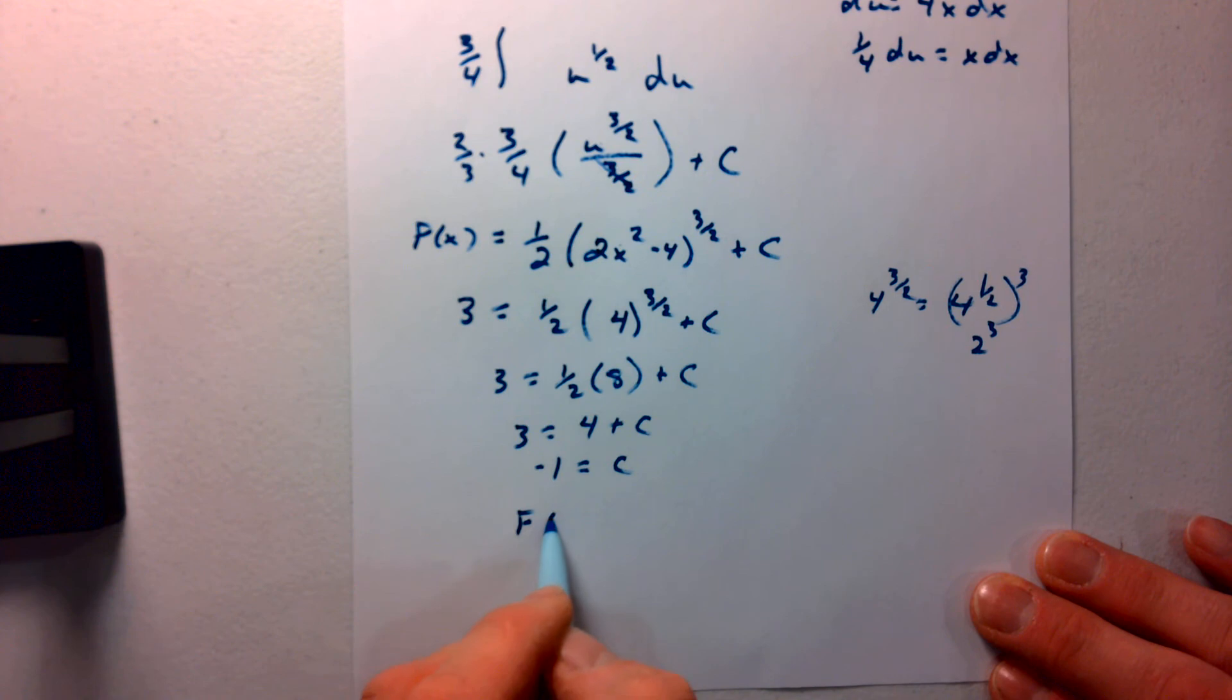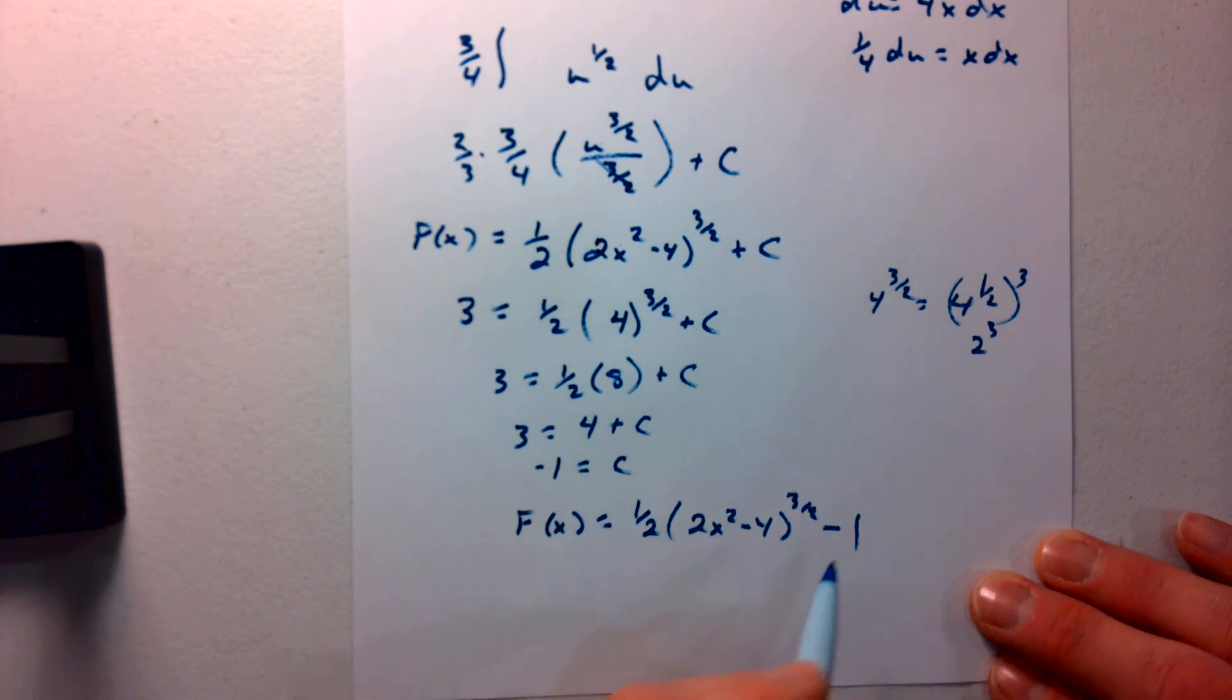So our original function, f of x, is going to equal 1 half the quantity of 2x squared minus 4 to the 3 halves minus 1. And that gives you a couple of examples on being able to find c using our u substitution. Good luck and joy. Happy integrating! Thank you!